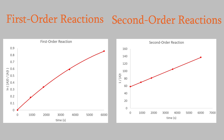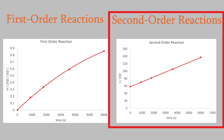Notice that there's a big difference between these two plots. We get a straight line for the second-order plot, but we get a curve for the first-order plot. That tells us that the reaction must be second-order. This is a really useful trick to know about. Whenever researchers encounter a new reaction for the first time, this is a common way of finding out the reaction order — we make plots using both first- and second-order equations, and whichever one gives us a straight line, that's the correct reaction order.